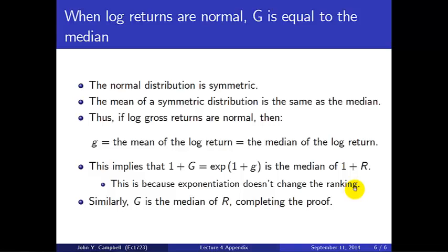So G then is the median of R, and that completes the proof. This is based on the assumption that log gross returns are normal. That's the key to this argument.